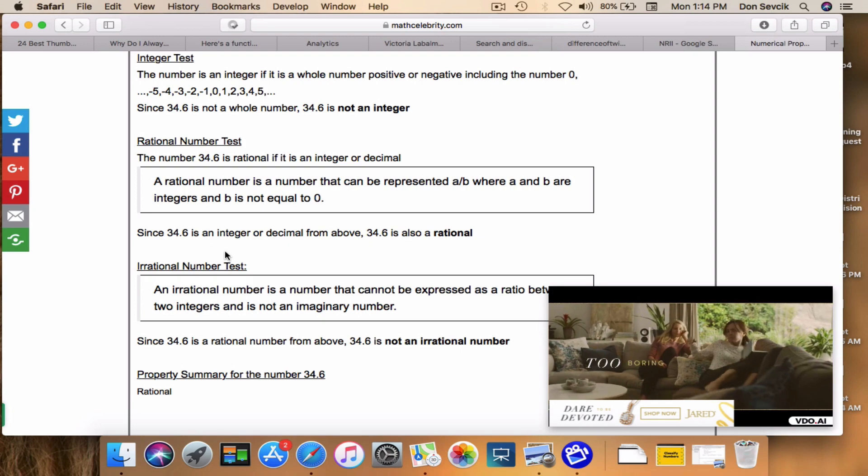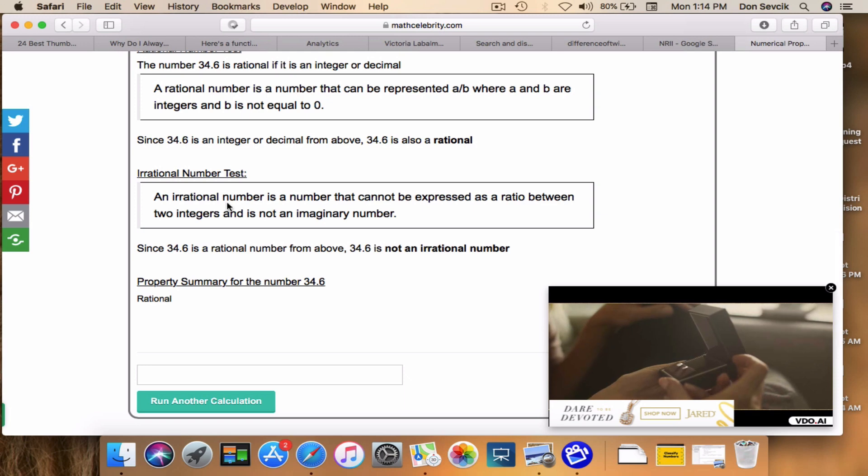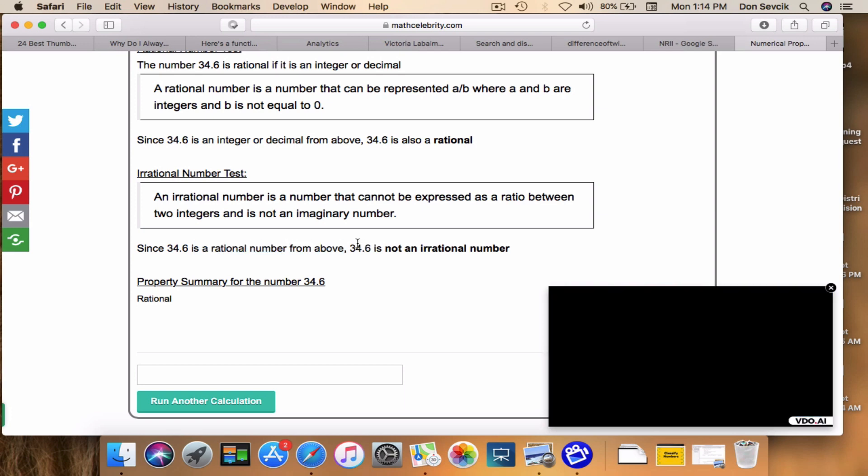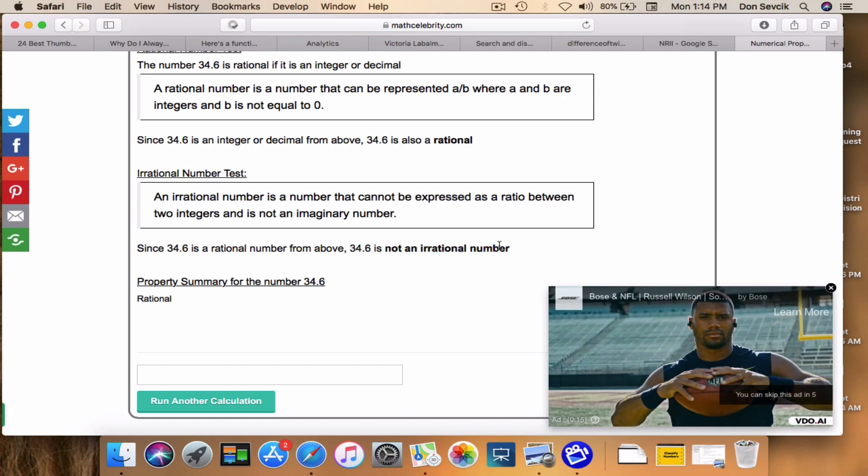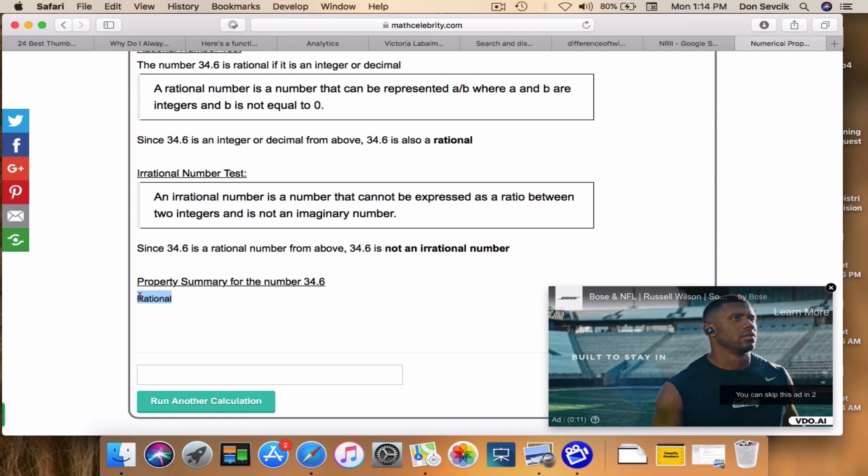The beauty of this is the calculator runs the negative test and it says: since 34.6 is a rational number from above, therefore 34.6 is not an irrational number. So as you can see, we ran four tests that passed only one - the rational test.